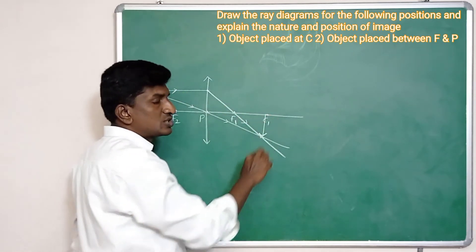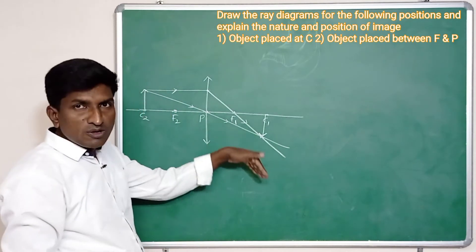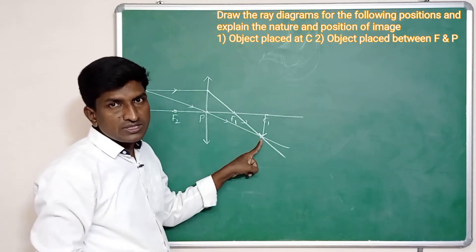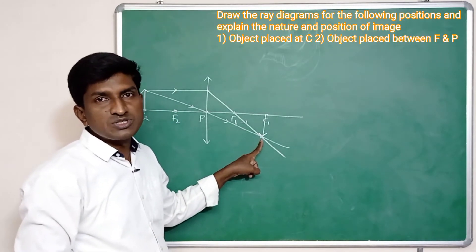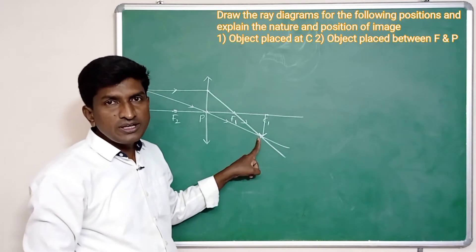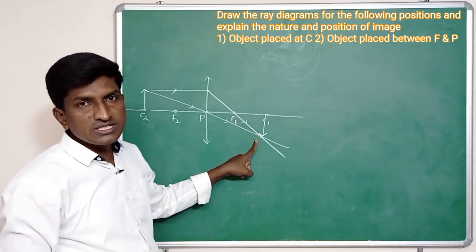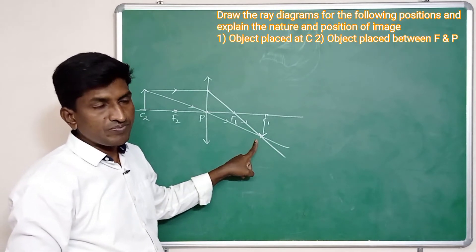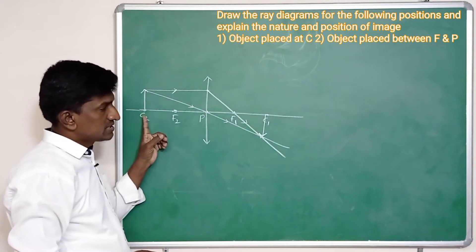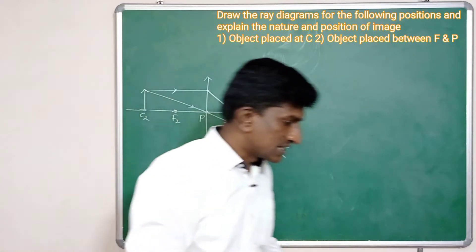The size of the object and the size of the image are both the same. The image is inverted and it is a real image — the image which can be captured on the screen is said to be a real image. So in this situation the image formed is a real image at center of curvature C.